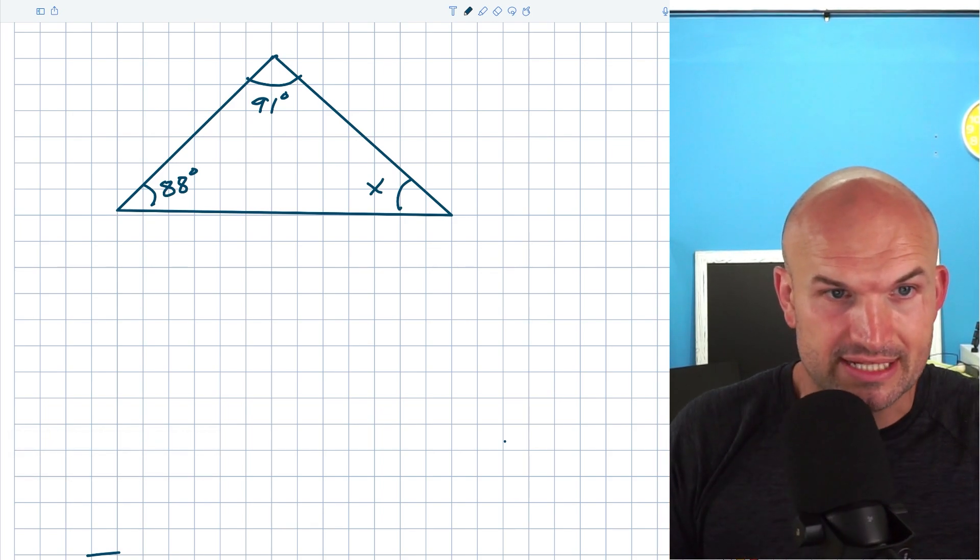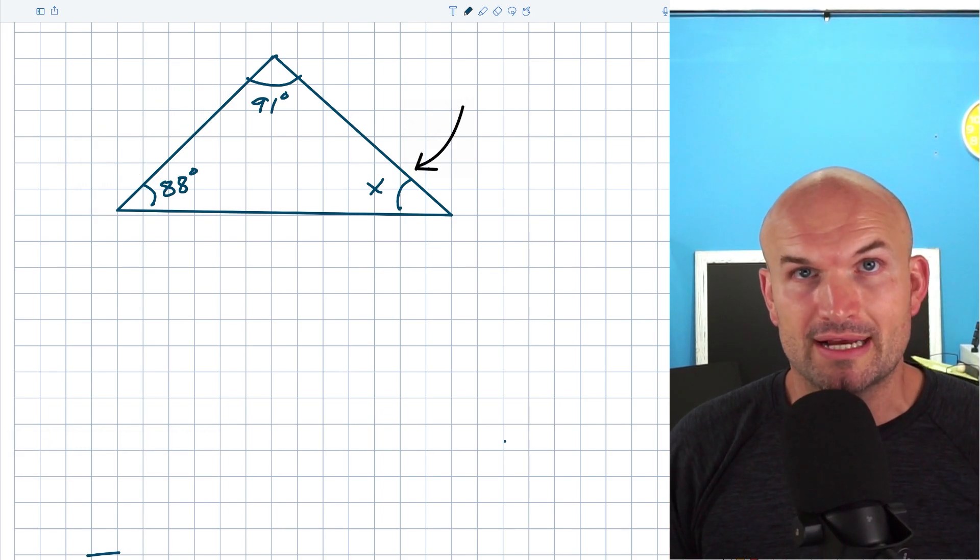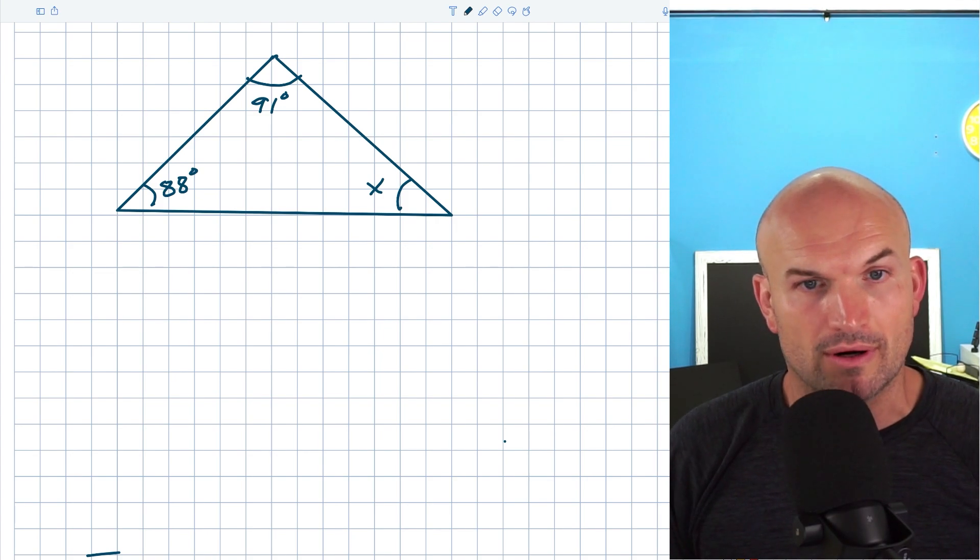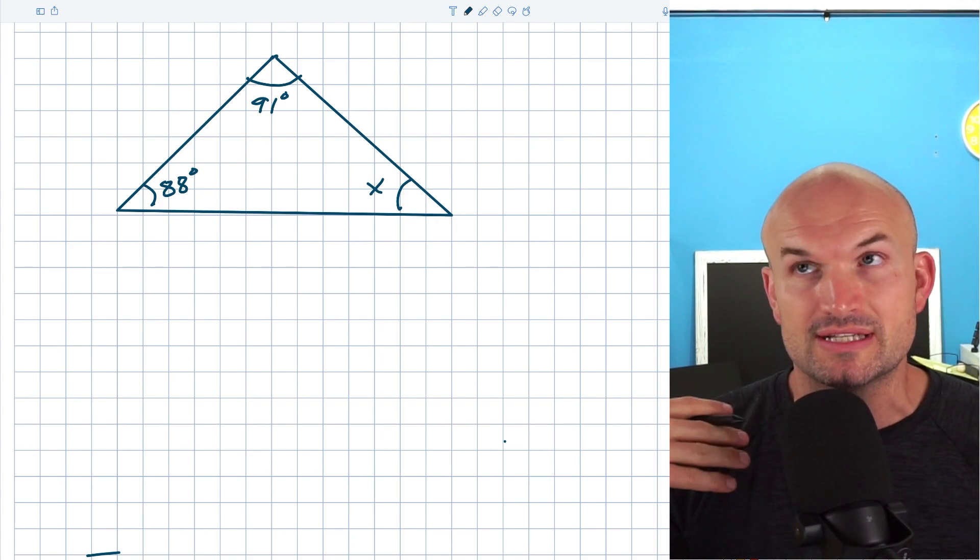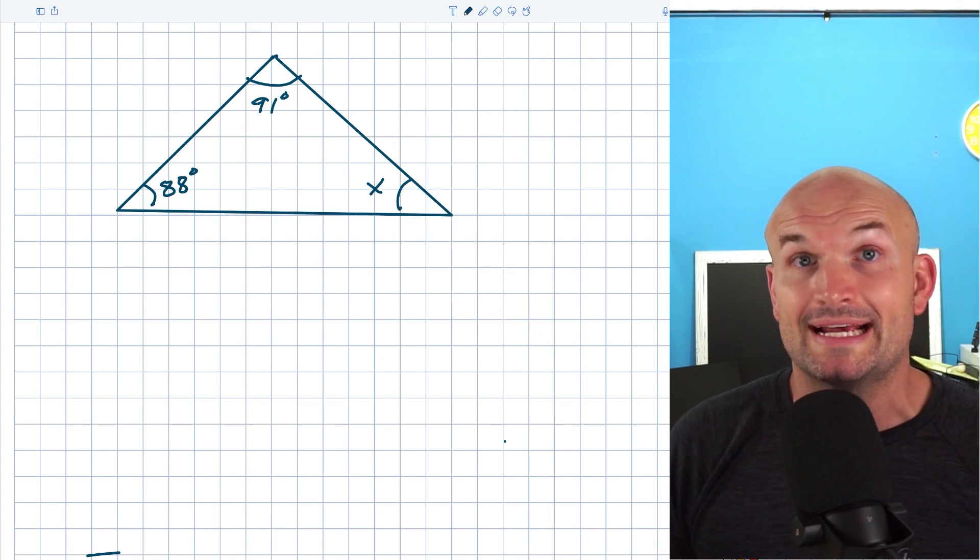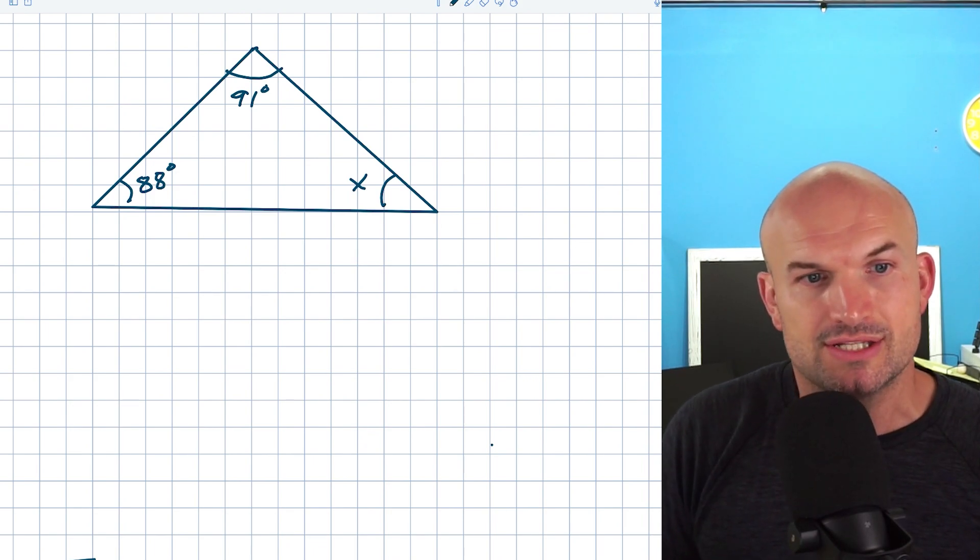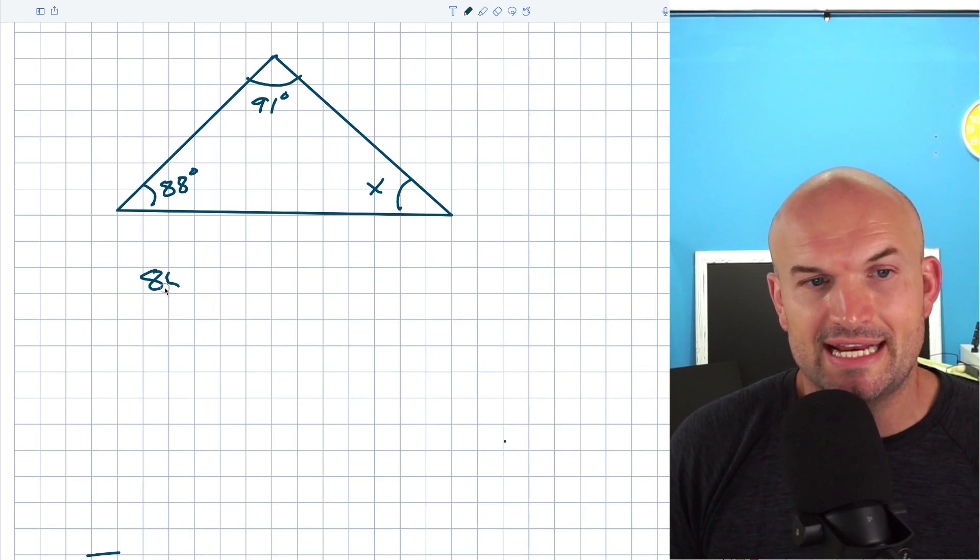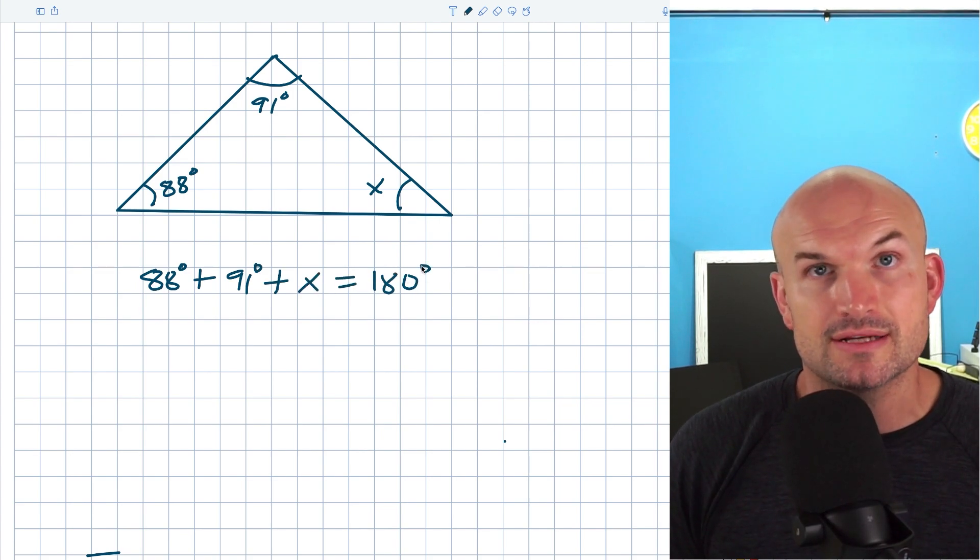In this first example, you can see that we have two angles and then we have a third angle which we need to solve for. One of the main things is students can repeat all the angles add up to 180 degrees, but if we have a variable X, the best thing to do is create an equation so that we can solve. So basically what we've been saying is 88 degrees plus 91 degrees plus X is equal to 180 degrees.